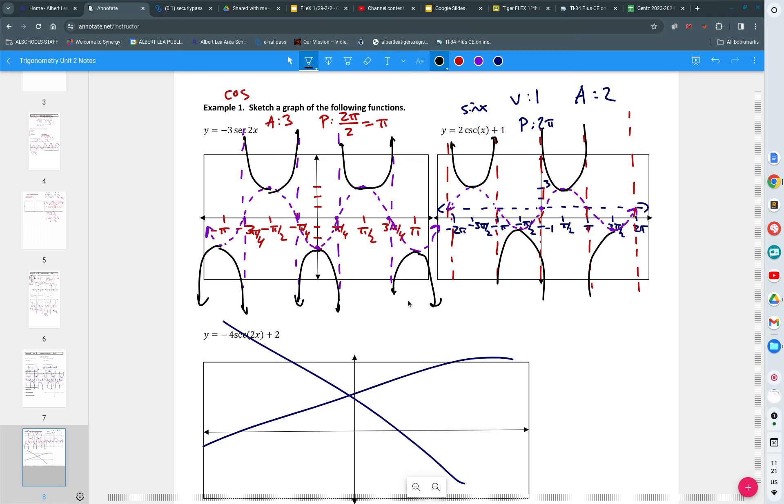Your assignment doesn't have any vertical shifts and it doesn't have any horizontal shifts. You only have to focus on the amplitude and the period. There are just four problems. The answer key is already posted on the board. Your final assignment for this unit.